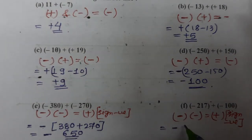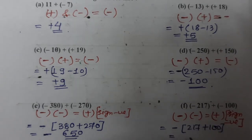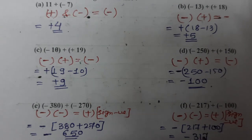So minus will come out, and 217 and 100 we have to add. So what will result? Minus 317 is the result.